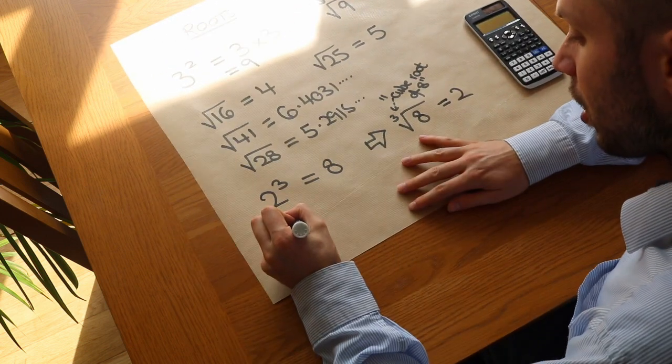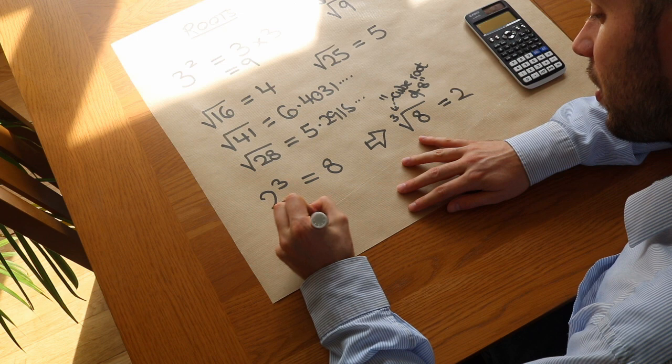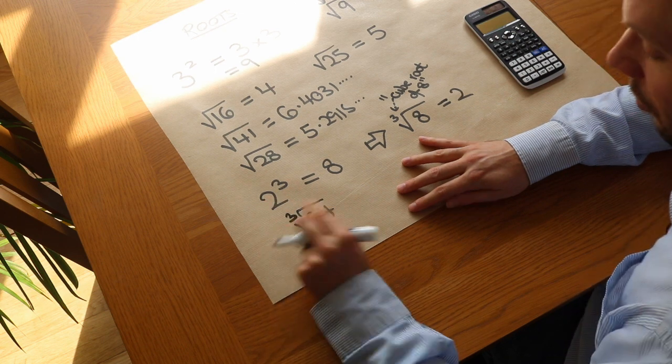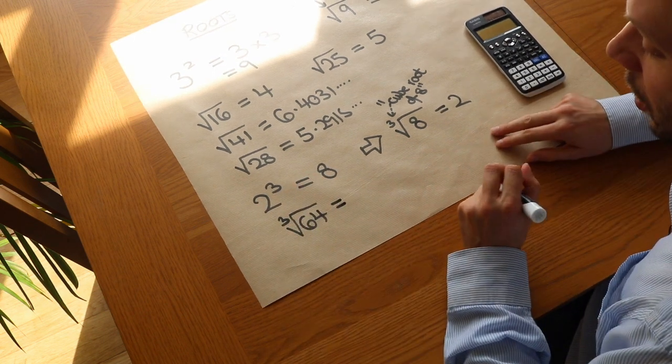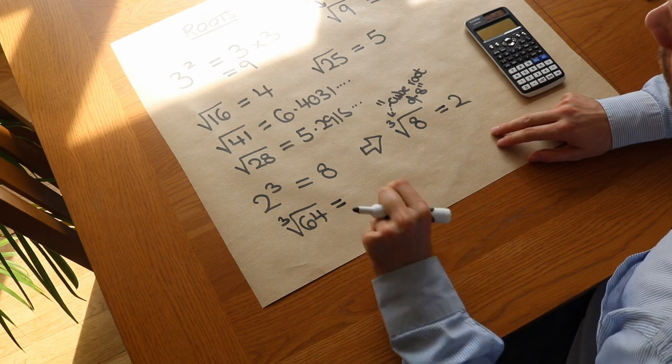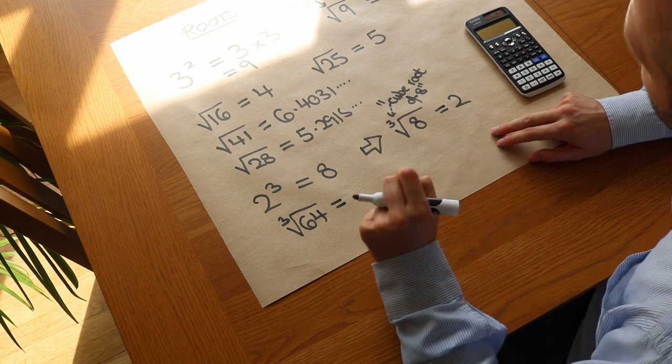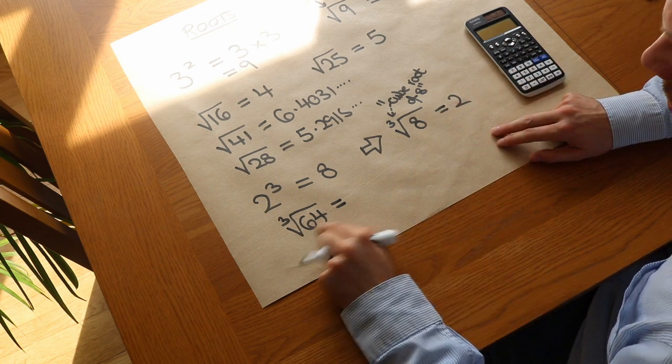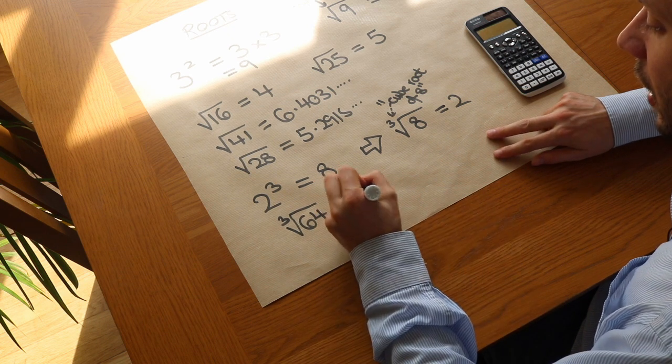Let's try it with some other numbers. What about the cube root of 64, with the little 3 there? What number cubed gives you 64? What number times by itself, times by itself, gives you 64? Well that number is 4.